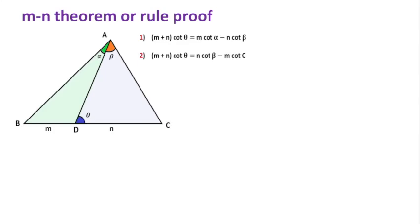Welcome to Definite Mind. In this video, we will prove the MN Theorem, also called the MN Rule. According to MN Theorem, if there is any triangle ABC and the line segment BC is divided by line segment AD in the ratio M to N, with alpha, beta, and theta angles, then two relations will come and I will prove both one by one. This theorem is important for finding the area of a triangle when alpha, beta, theta angles and the ratio BD to DC are given. It is also asked in various examinations, so watch this video till the end.